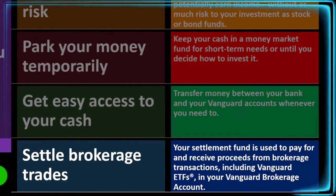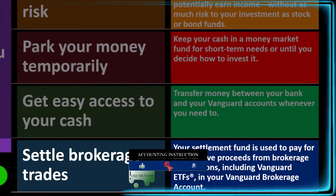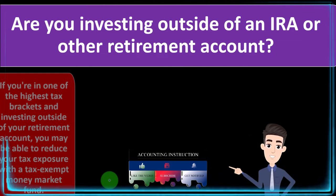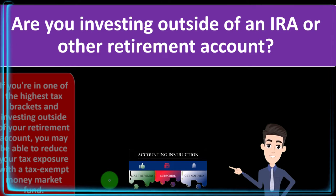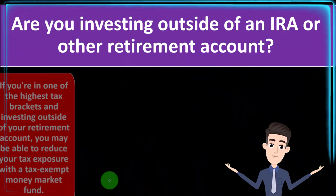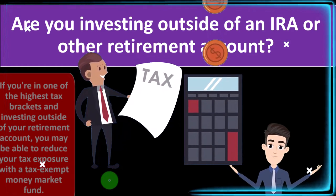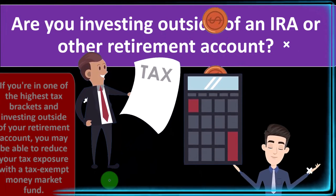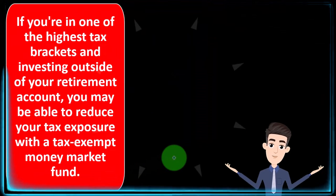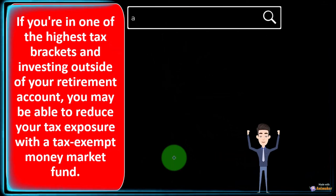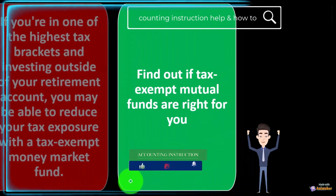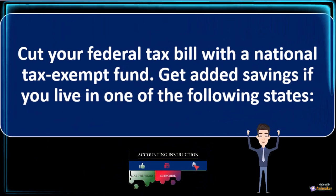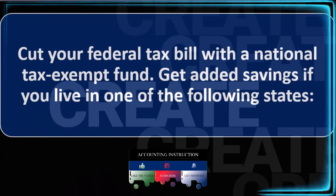Your settlement fund is used to pay for and receive proceeds from brokerage transactions, including Vanguard ETFs in your Vanguard brokerage account. You also need to consider whether you're investing outside of an IRA or other retirement account, since there will be tax consequences and differences in when you recognize gains. If you're in one of the highest tax brackets and investing outside of a retirement account, you may be able to reduce your tax exposure with a tax-exempt money market fund. There are also state-specific options for residents of California and New York.